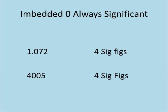Embedded zeros are always significant, as in the numbers 1.072 and 4005 — all digits are significant.